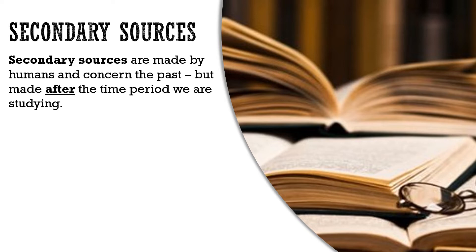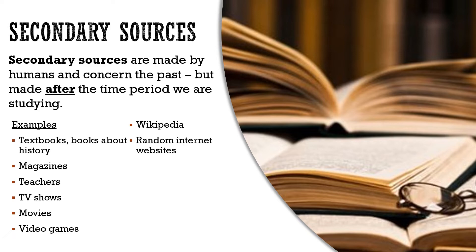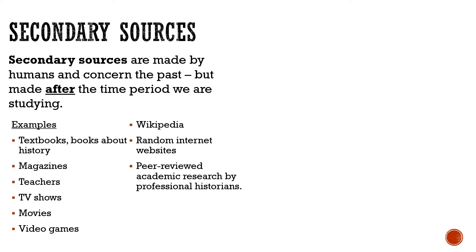So what about secondary sources then? A secondary source is anything that concerns the past but comes afterwards — it's not something created in the past. An obvious secondary source would be your textbook, or any book about history. Magazines about history, teachers, TV shows, movies, and video games are all secondary sources. They were not created in the time period you're studying. Wikipedia and random internet websites are secondary sources. And even peer-reviewed academic research by professional historians — which is the most important secondary source — is still a secondary source.